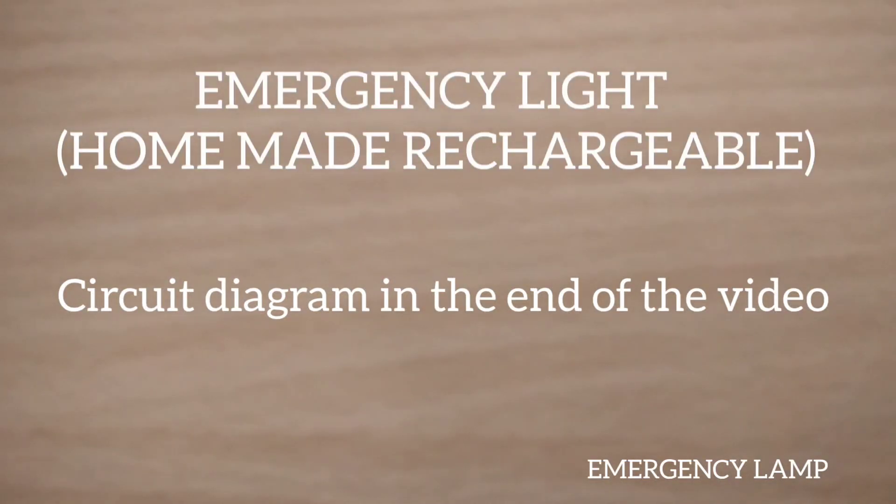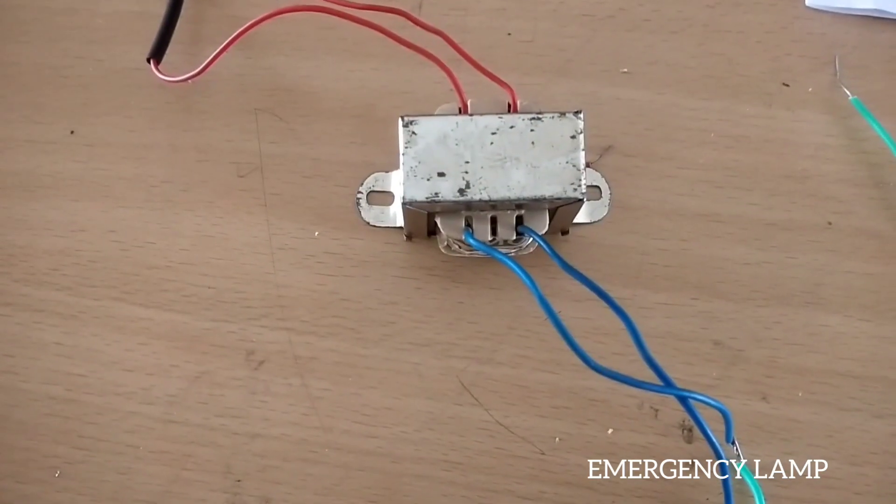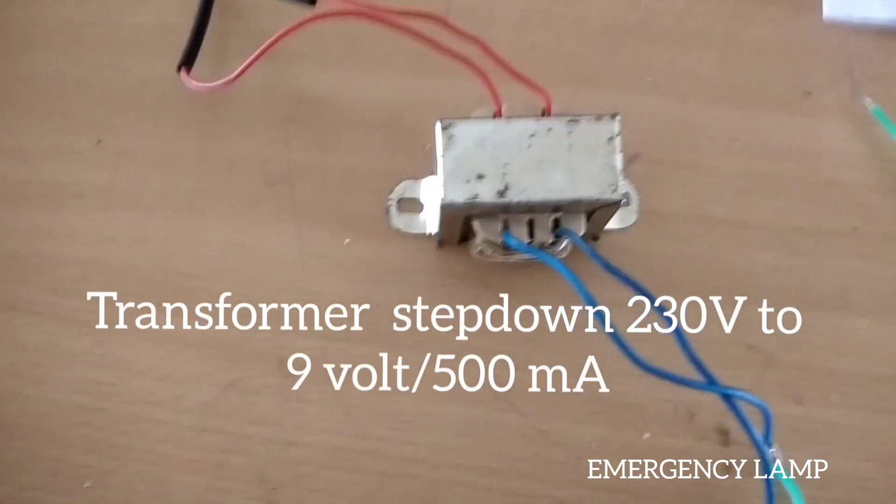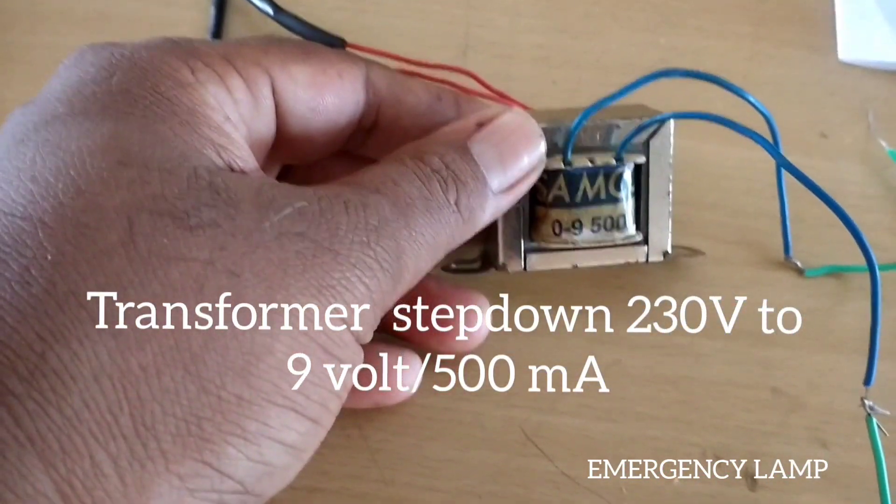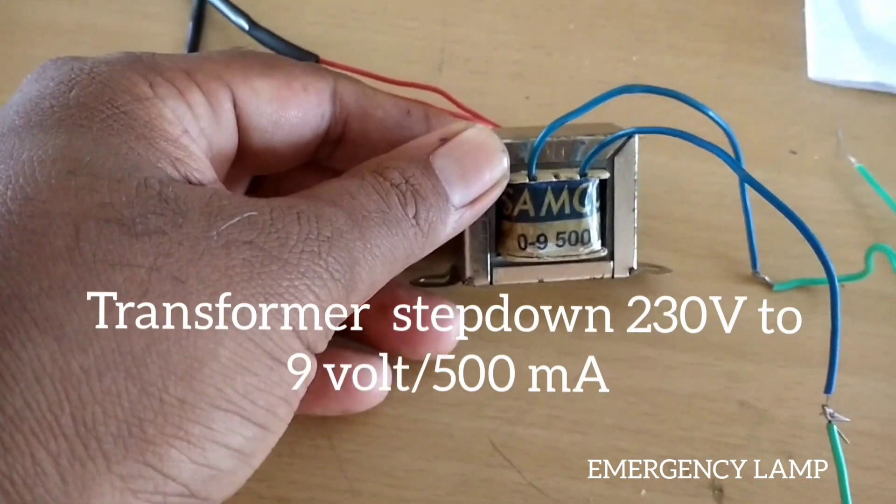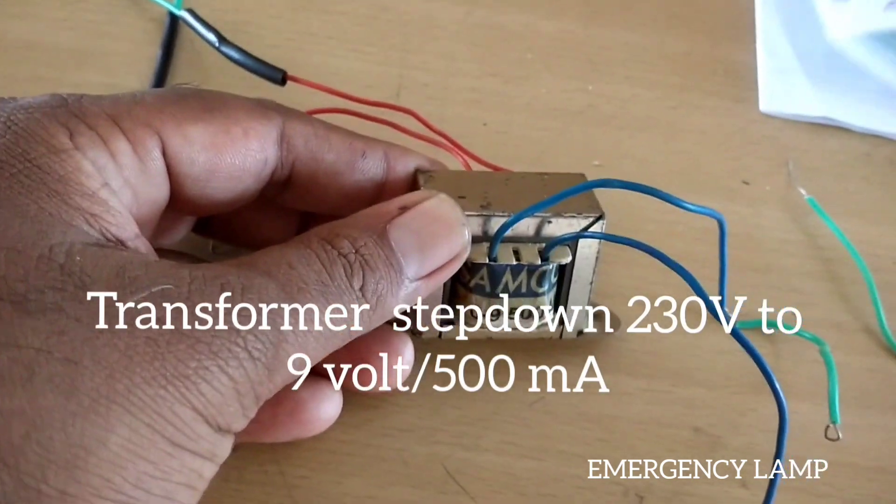Today we are going to make an emergency lamp. For that, we are going to use a step-down transformer that is 230V step down to 9 volt and 500 milliamps.